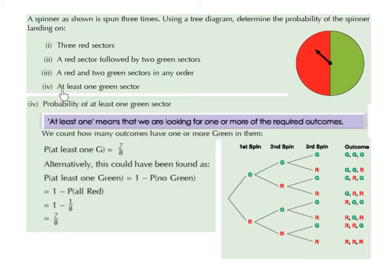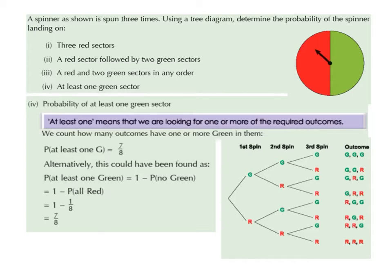Part 4: what's the probability of landing on at least one green sector? 'At least one' means we are looking for one or more of the required outcomes — the phrasing is very important. We count how many outcomes have one or more green: that's 7 outcomes. So the probability of at least one green is 7 over 8. Alternatively, this equals 1 minus the probability of no green, which is the same as the probability of all red — 1 over 8. So 1 minus 1 over 8 equals 7 over 8. Probabilities must always add up to 1.